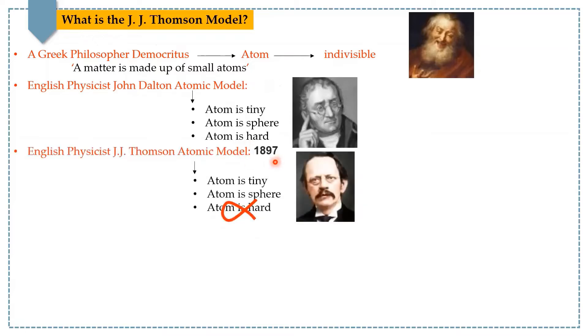In 1897, English physicist J.J. Thomson proposed his model. He believed that yes, atom is tiny and atom is sphere, but he did not agree with John Dalton on his third point that atom is hard.